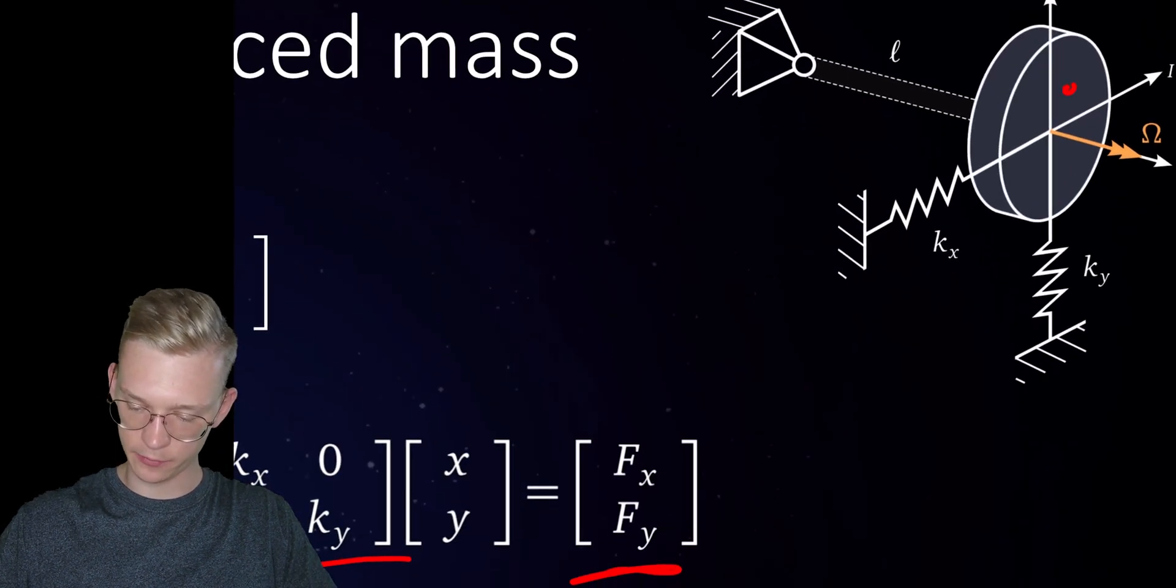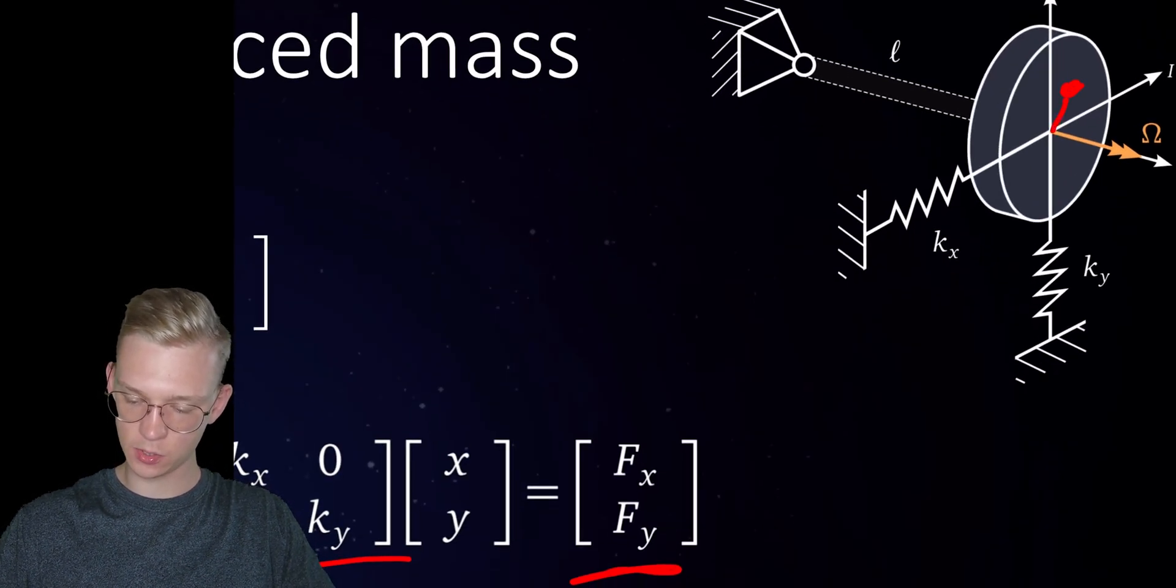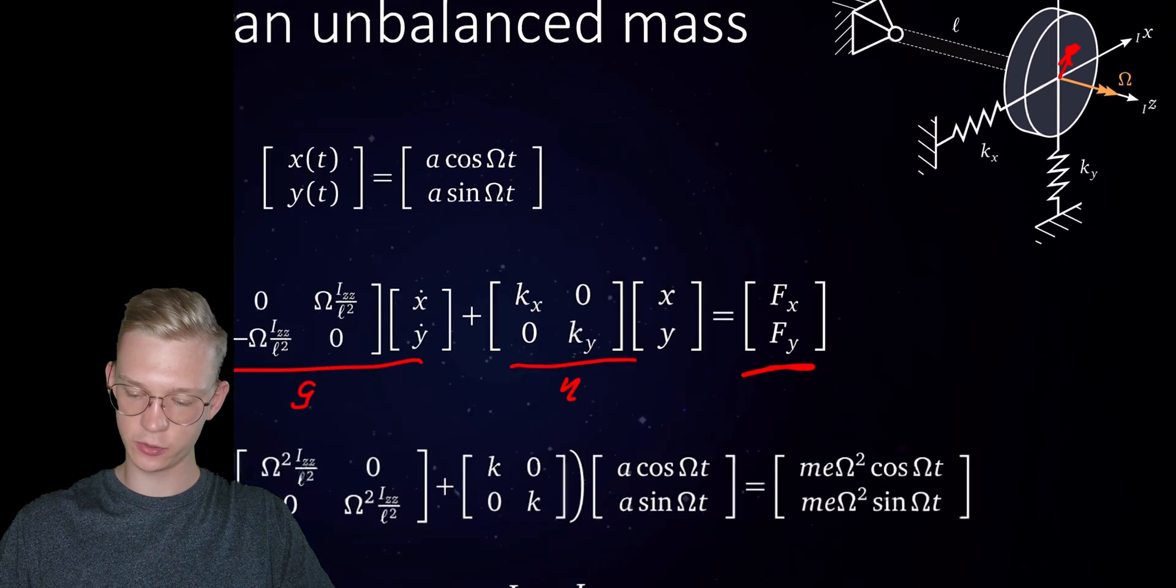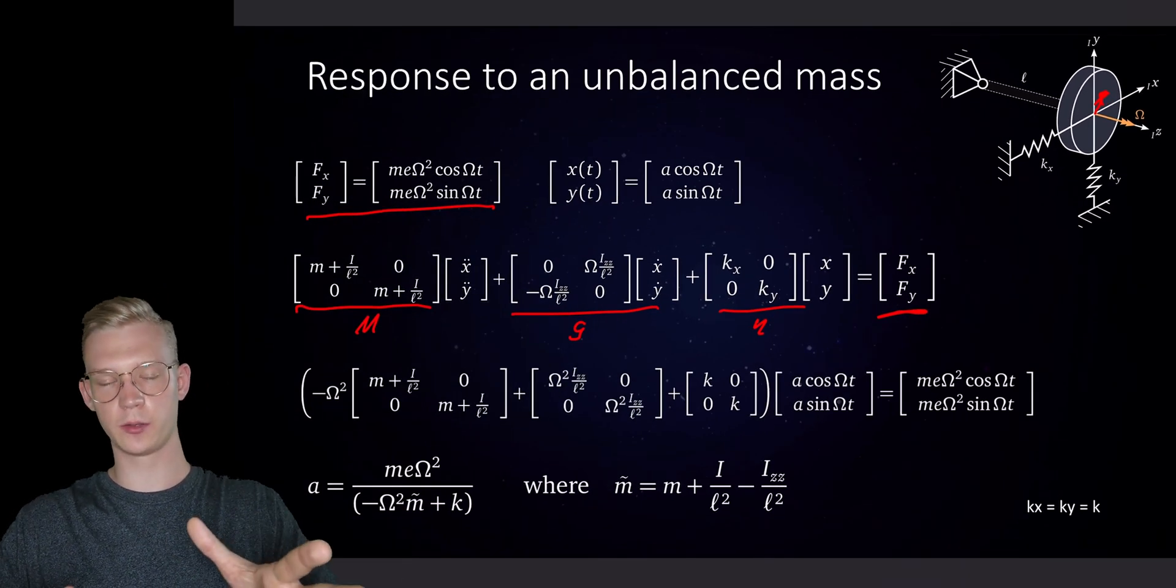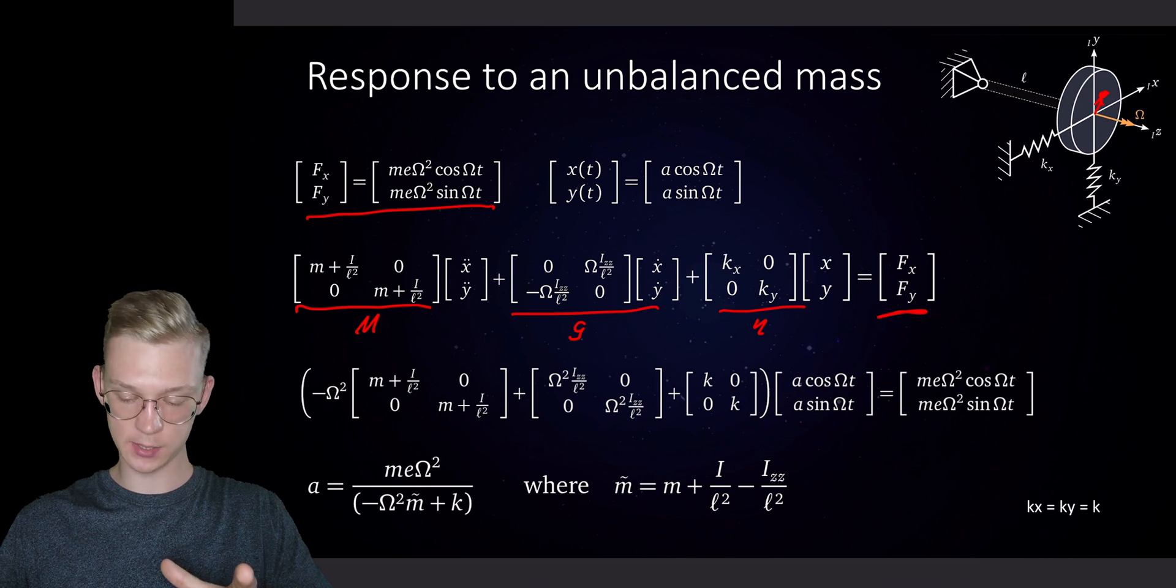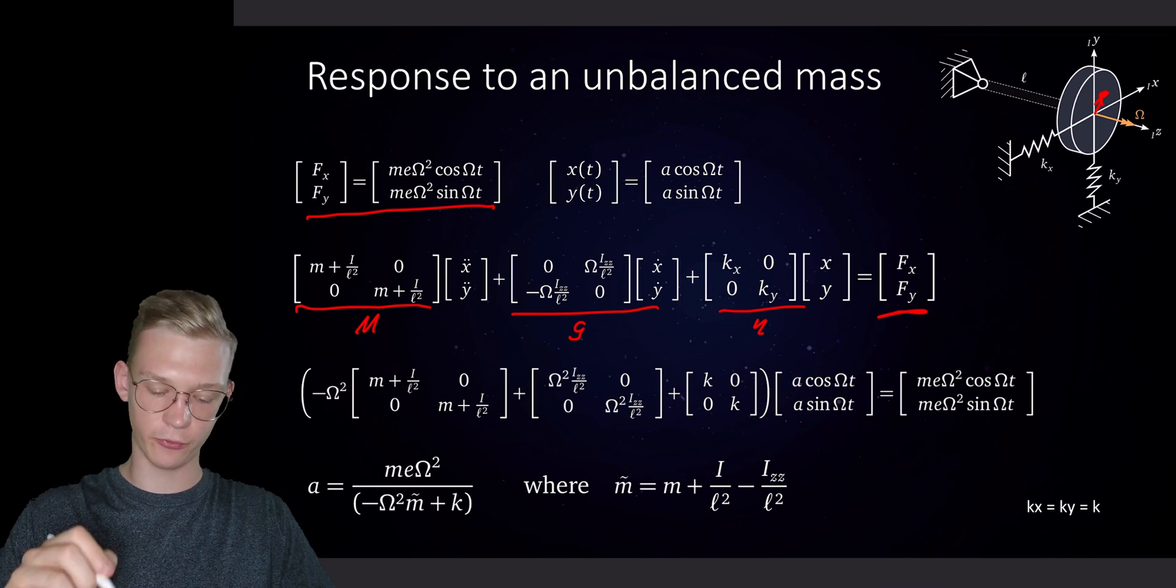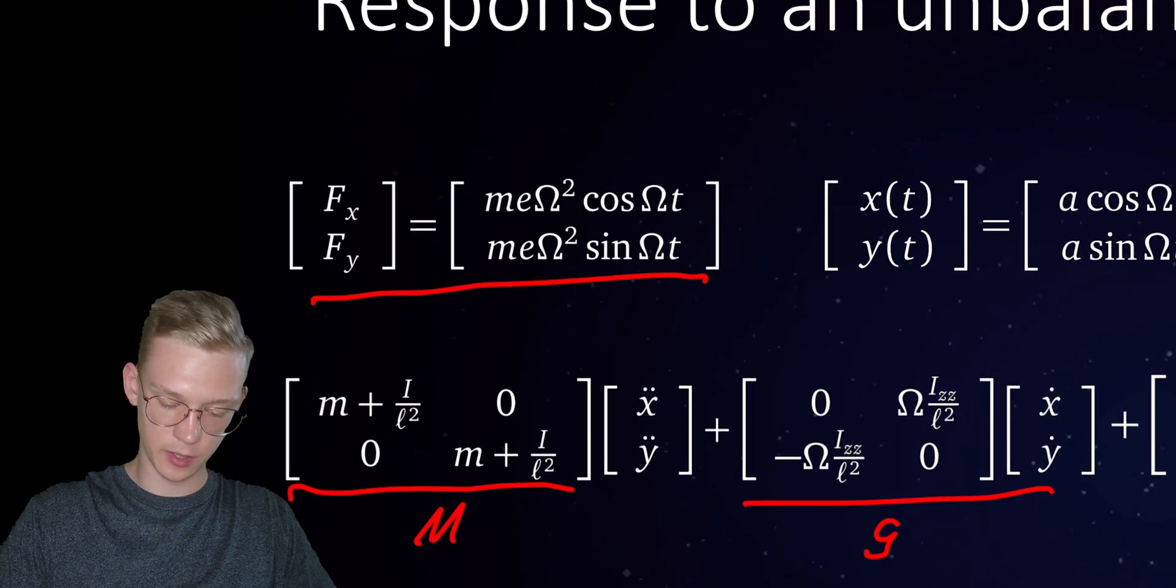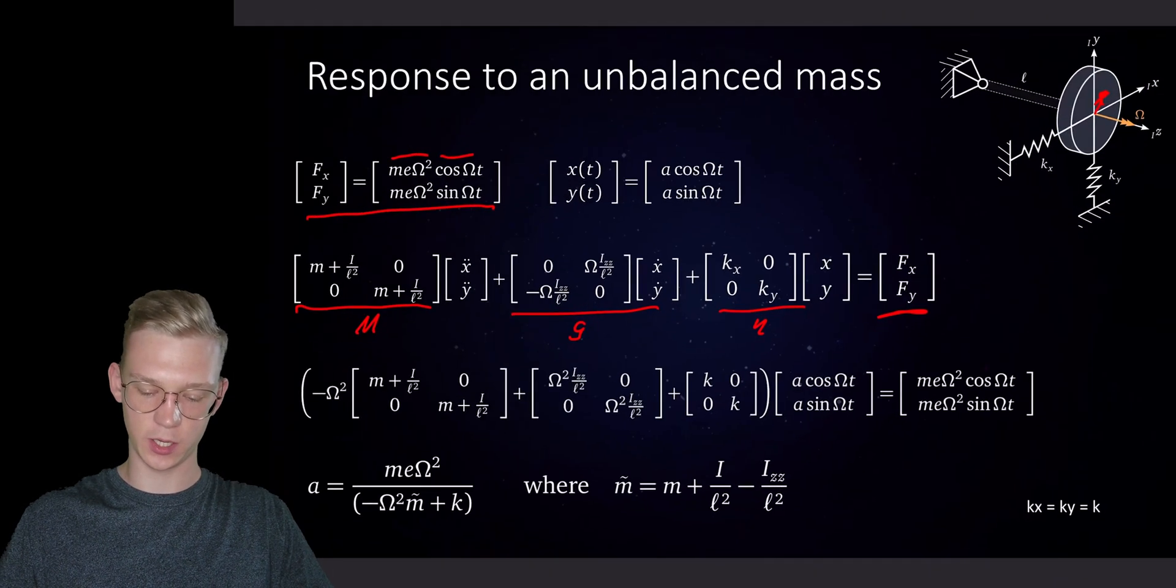So the center of gravity for example is here. This vector is from the center to the center of mass or center of gravity. So we have the rotation speed and the position vector.